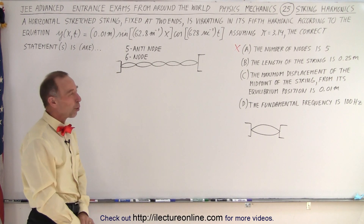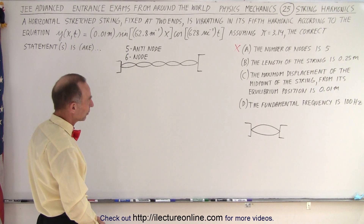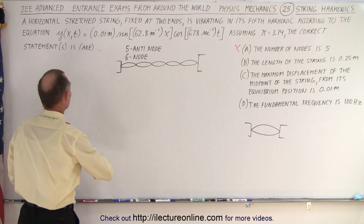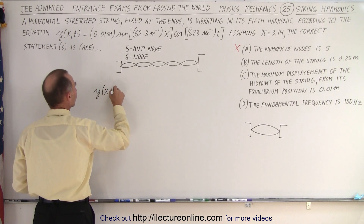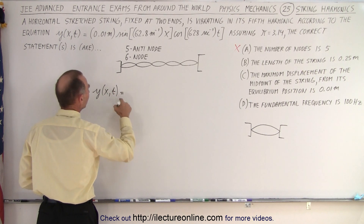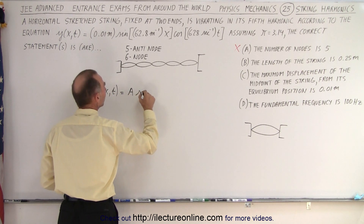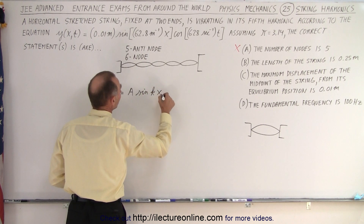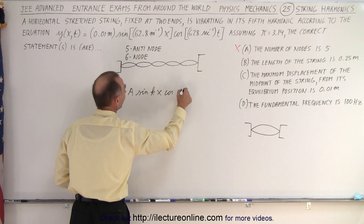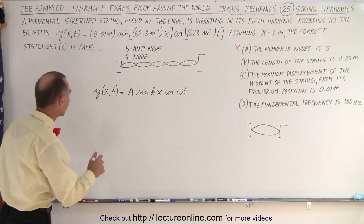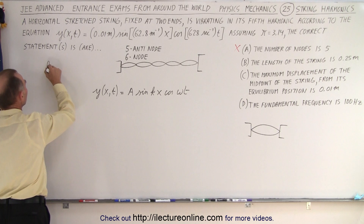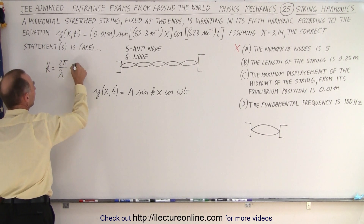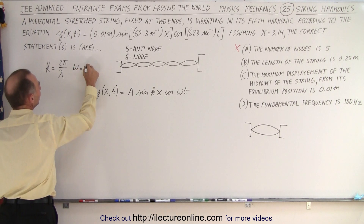They tell us the length of the string is 0.25 meters — how can we tell? We need to write down the general equation. The general equation for a vibrating string is y = amplitude × sin(kx) × cos(ωt), where k is the wave number defined as 2π/λ, and ω, the angular frequency, is equal to 2πf.